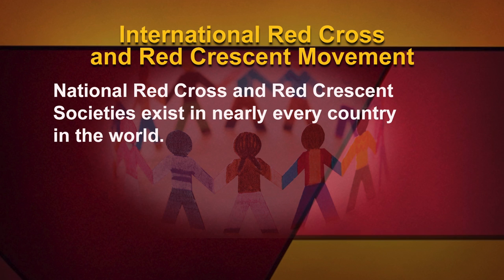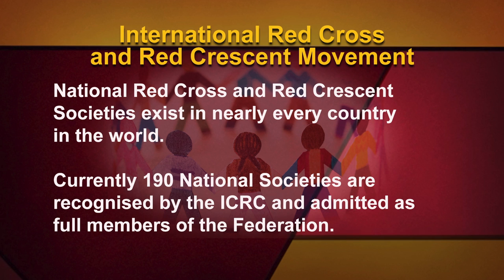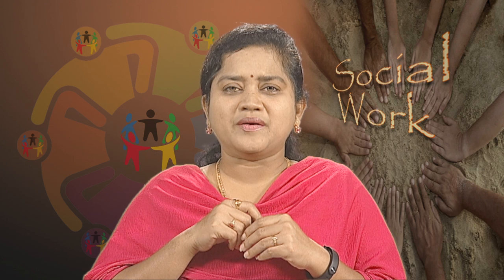National Red Cross and Red Crescent Societies exist in nearly every country in the world. Currently, 190 National Societies are registered by the ICRC and admitted as full members of the federation. Each entity works in its home country according to the principles of international humanitarian law and the statutes of the international movement. Depending on their specific circumstances and capacities, national societies can take on additional humanitarian tasks. In many countries, they are tightly linked to the respective national healthcare system by providing emergency health services.